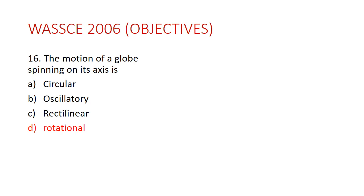Question sixteen: the motion of a globe spinning on its axis is D — rotational. There are different types of motion: rectilinear (moving in a straight line), oscillatory (to-and-fro movement like a pendulum or seesaw), circular (moving along a circular path), and rotational. Circular and rotational differ: in circular motion the body moves along a circular path, while in rotational motion the body turns about its own axis at one fixed point.